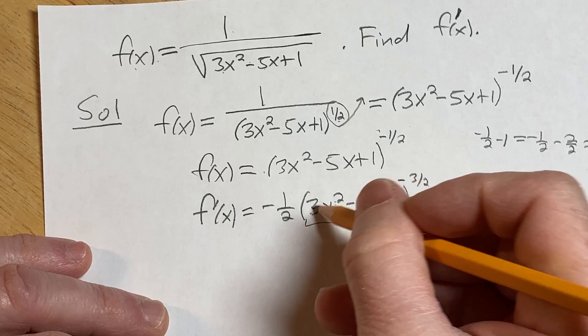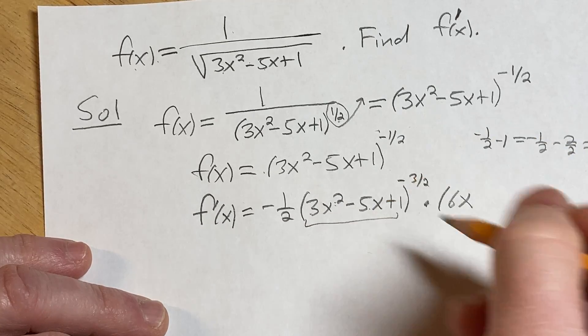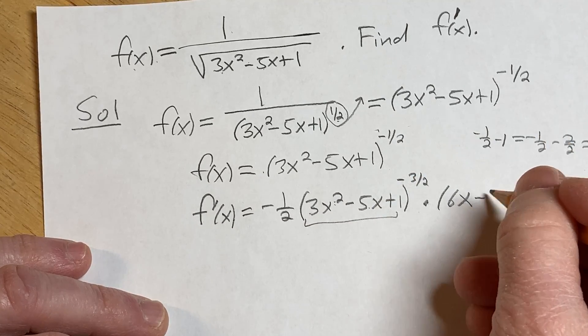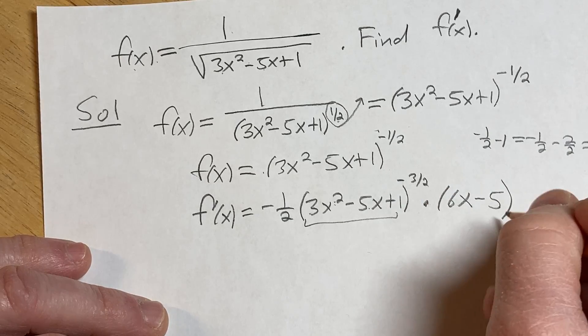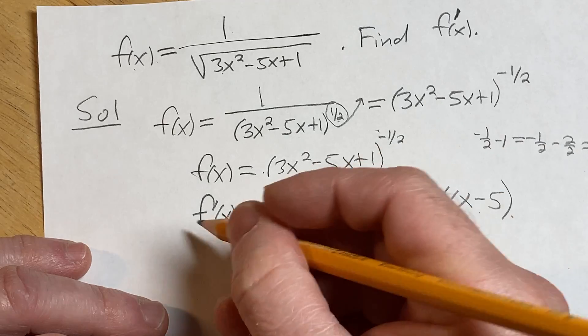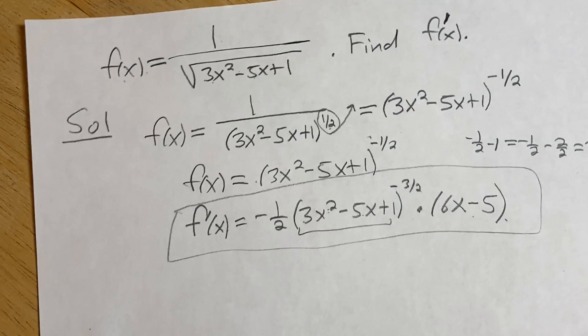Here it's going to be 6x because 2 times 3 is 6. The derivative of minus 5x is minus 5. The derivative of 1 is 0. And that's pretty much it. You could perhaps put this up here or just leave it. That would be the final answer. I hope it's been helpful to you. Good luck.